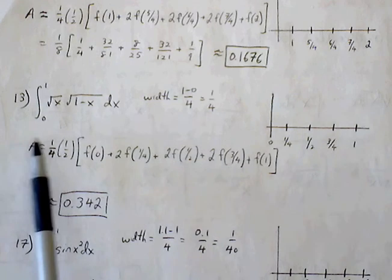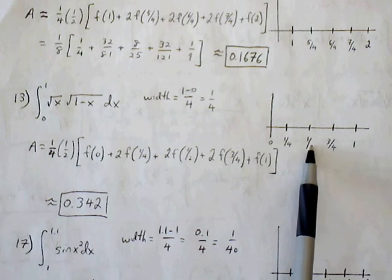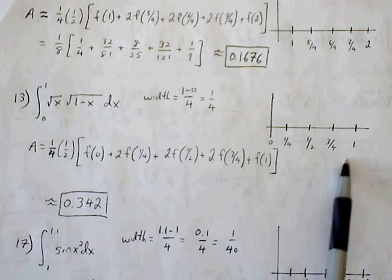which is our left end point, we're going to keep adding 1 fourth, so 0 plus 1 fourth is 1 fourth, plus 1 fourth is 1 half, plus 1 fourth, 3 fourths, plus 1 fourths, we get 1.